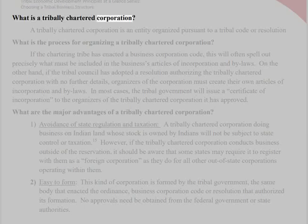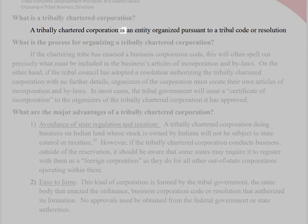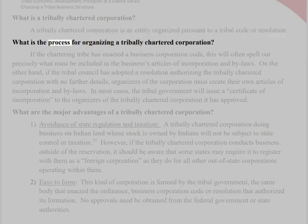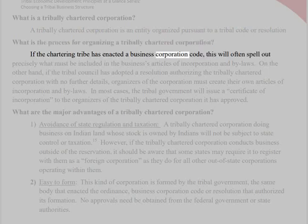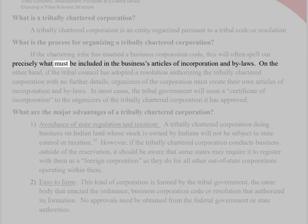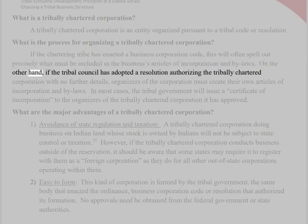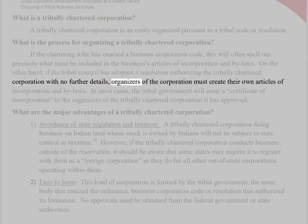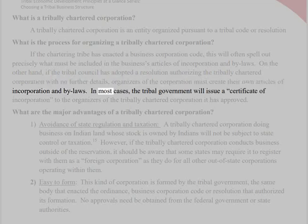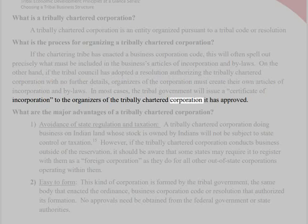What is a tribally chartered corporation? A tribally chartered corporation is an entity organized pursuant to a tribal code or resolution. What is the process for organizing a tribally chartered corporation? If the chartering tribe has enacted a business corporation code, this will often spell out precisely what must be included in the business's articles of incorporation and bylaws. On the other hand, if the tribal council has adopted a resolution authorizing the tribally chartered corporation with no further details, organizers of the corporation must create their own articles of incorporation and bylaws. In most cases, the tribal government will issue a certificate of incorporation to the organizers of the tribally chartered corporation it has approved.